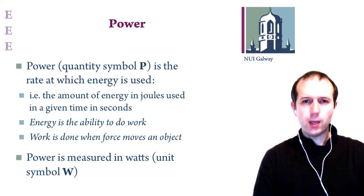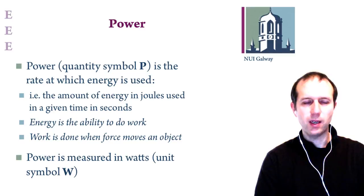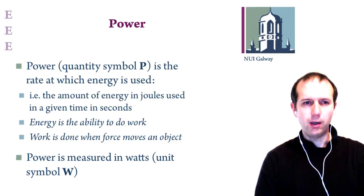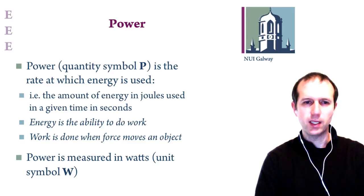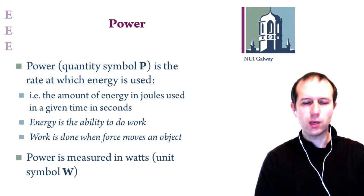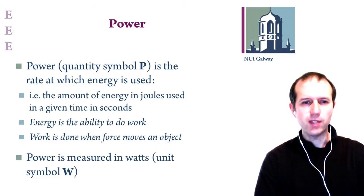A relevant term for batteries and electronic systems is the amount of power, which is basically the rate at which energy is used by the system. We are familiar with the term power from various devices and generating stations. In a general context, power is the amount of energy in joules used in a given time in seconds.